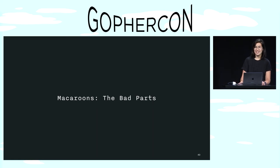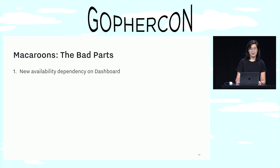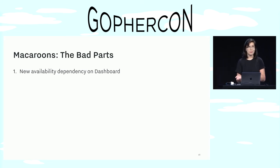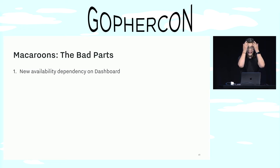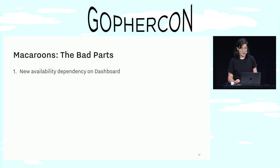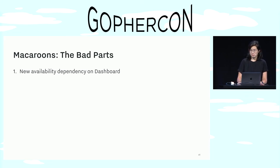Okay, macaroons — the bad parts. The first problem was that we had just created an availability dependence on Dashboard. If Dashboard went down and therefore couldn't produce a discharge macaroon, then users wouldn't be able to access the API. And this was especially scary since we expected our Go API to be more stable than Dashboard, which is a Rails app. Another problem was that it was very cumbersome to use the API, especially without an SDK.